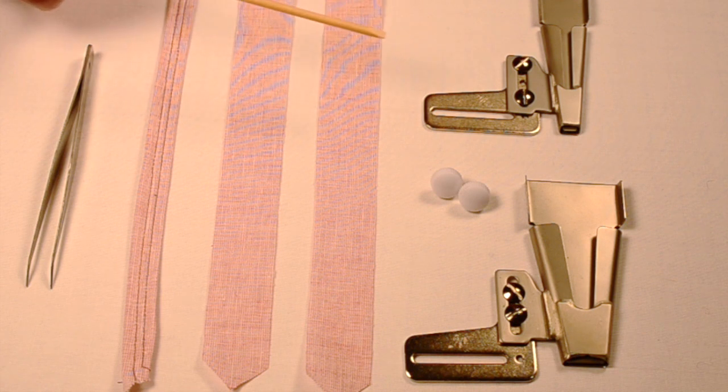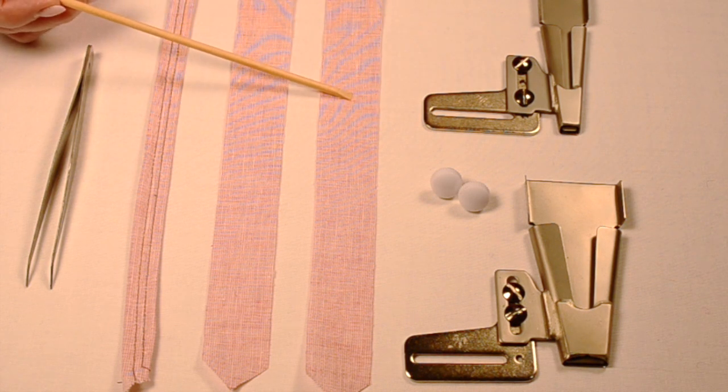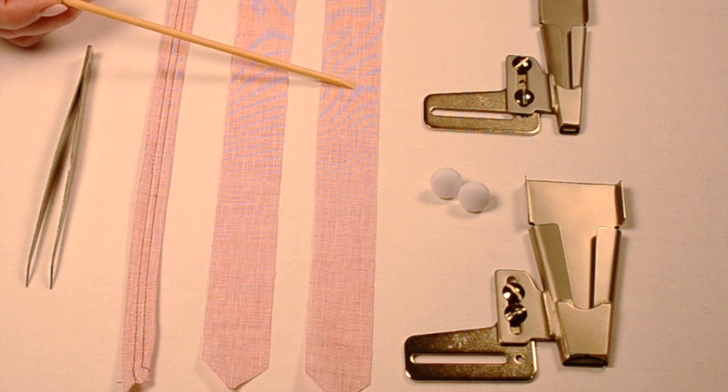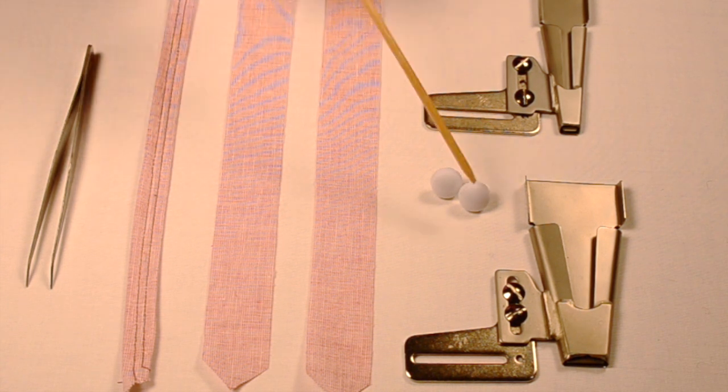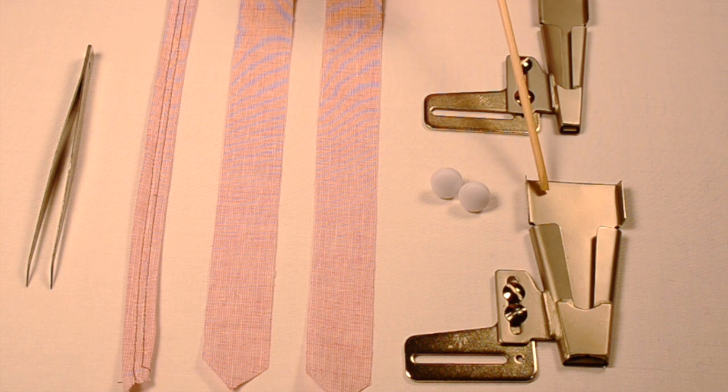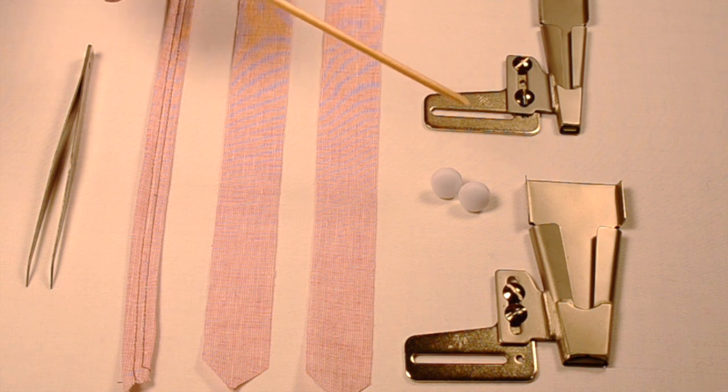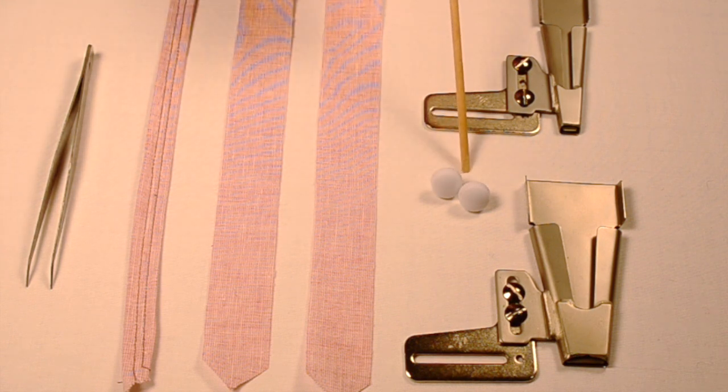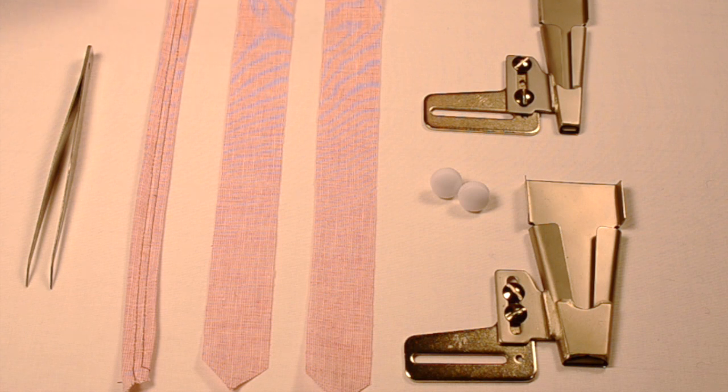On the packaging it gives you very specific widths to cut your fabric strips for each one. For the three-quarter inch one they ask that you cut your strips seven-eighths of an inch wide, but I'll give you a little variation on that and show you why. And for the one and a half inch, the binding strip should be cut one and five-eighths inches.